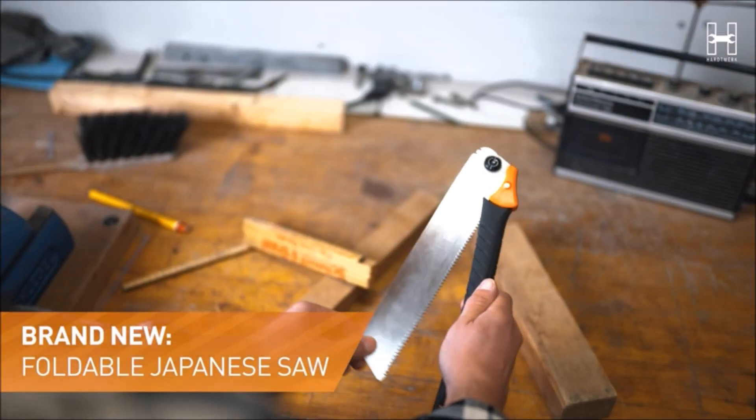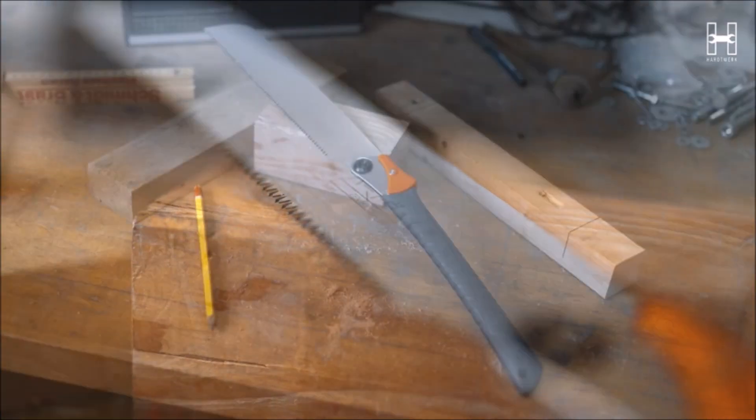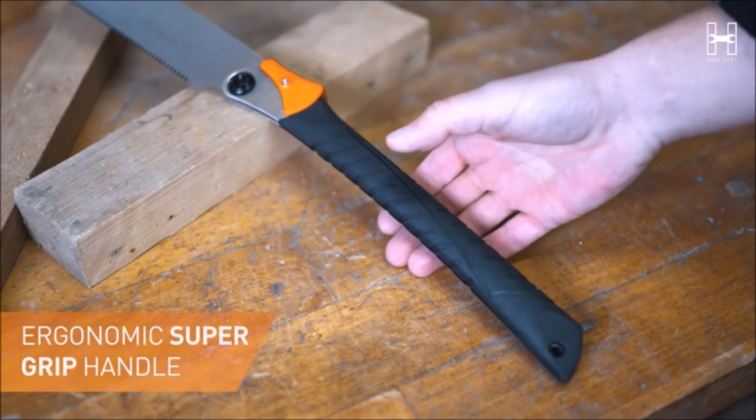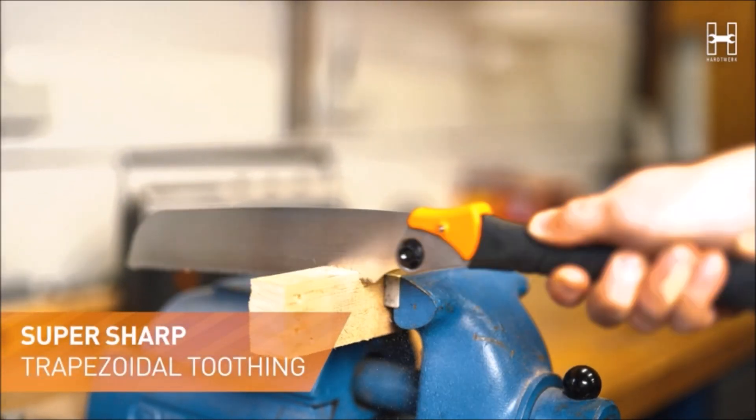Japanese Pull Saw Foldable. Foldable Japanese pull saw can be easily stored in your bag or drawer, while conventional Japanese saws are large, unhandy, and take up a lot of space.